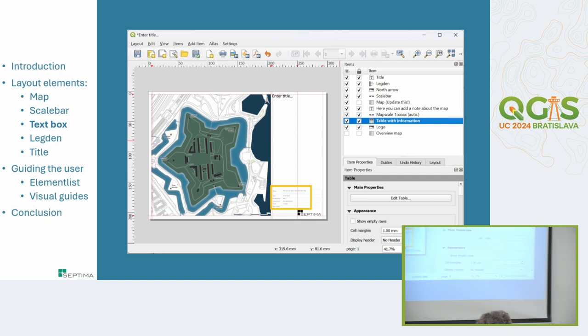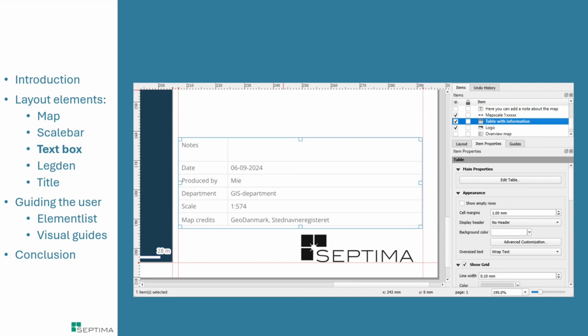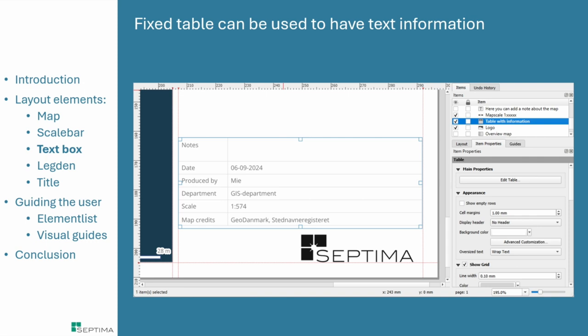Quite often people want text information in a layout — things like date of creation, who created the map, department, scale, and map credits. I find it's really good to use the fixed table element for that. You can choose a gray color for the lines or make them invisible, but you still control how the text is placed. This prevents text from shifting around, so you don't have to keep adjusting it. The fixed table is really good for text information in the map.